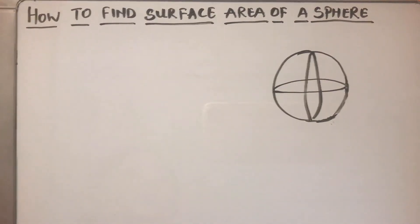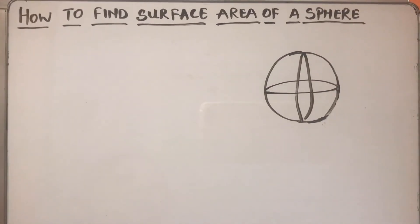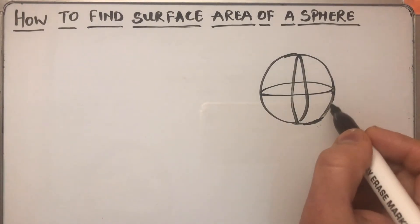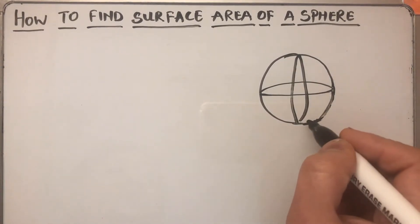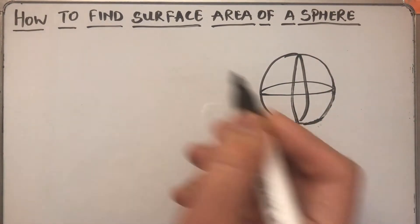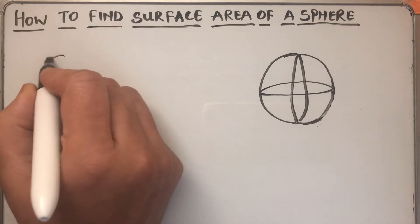Hello viewers, today we are going to learn how to find the surface area of a sphere. A sphere is a figure which is made up of four circles because it is round and circular from all sides.